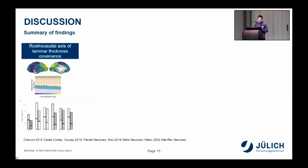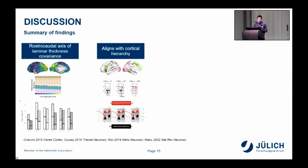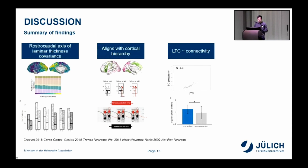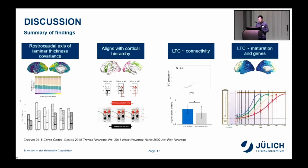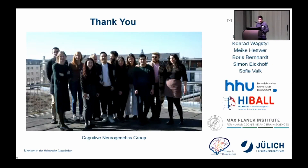To sum up, we found a rostro-caudal axis of laminar thickness co-variation from frontal parts of the brain towards the back of the brain, describing a shift from dominance of deeper layers to superficial layers. We then looked at the functional relevance of this axis and observed that it aligns with cortical hierarchy, which makes sense given the laminar regularities of feedback versus feedforward connections across cortical hierarchy. We also observed that two regions more similar in their laminar structure are more strongly and more likely to connect. Finally, we provided evidence in favor of the idea that laminar thickness similarity arises because of similarity in maturational and genetic effects. Thank you very much for your attention, thanks to my group, to the co-authors, and to our partners.